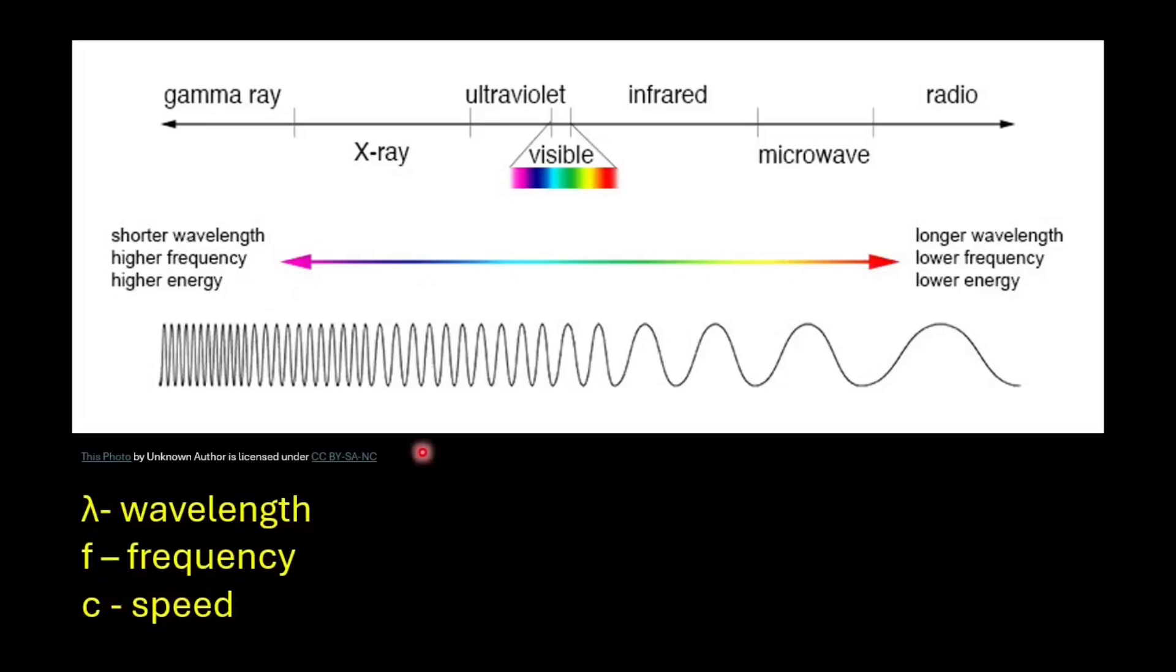An important thing to note is that wavelength and frequency are inversely proportional. Increasing the frequency decreases the wavelength and vice versa. They are related by speed equals frequency into wavelength, where speed is the speed of light in a vacuum and its value is 3 × 10^8 meter per second. Gamma rays have the highest frequency and therefore the shortest wavelength, whereas radio waves have the lowest frequency and hence the longest wavelength.